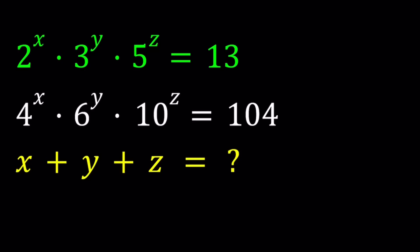We have 2 to the power x times 3 to the power y times 5 to the power z equals 13. And 4 to the power x times 6 to the power y times 10 to the power z equals 104. And we're supposed to evaluate x plus y plus z.